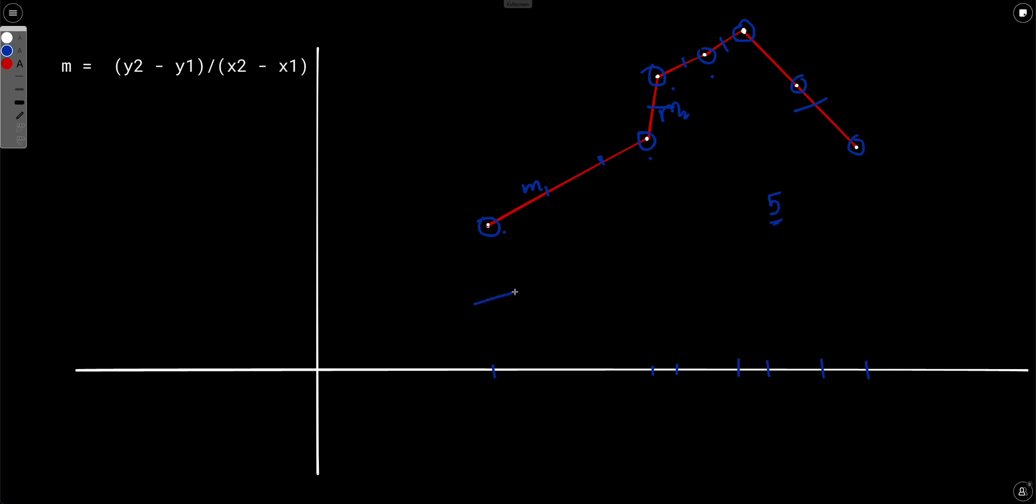So in case M1 is equals to M2, it denotes that these two line segments, the line segment joining the first and the second point and the line segment joining the second and the third point, are parallel because their slopes are equal.